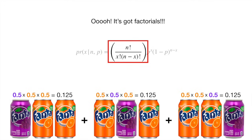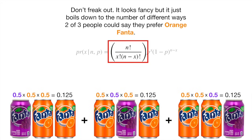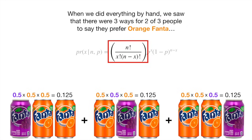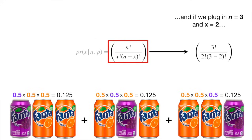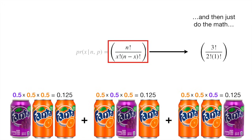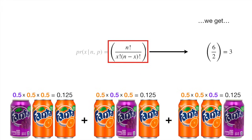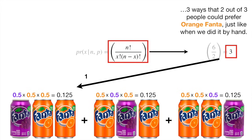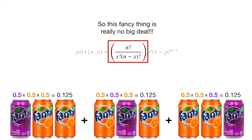It's got factorials — don't freak out. It looks fancy, but it just boils down to the number of different ways two of three people could say they prefer orange Fanta. When we did everything by hand, we saw there were three ways for two of three people to say they prefer orange Fanta. And if we plug in n equals 3 and x equals 2 and do the math, we get 3 — three ways that two out of three people could prefer orange Fanta, just like when we did it by hand. So this fancy thing is really no big deal.